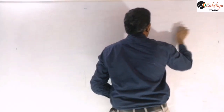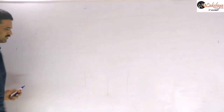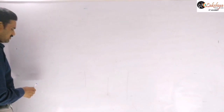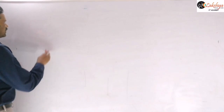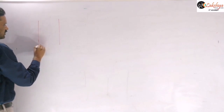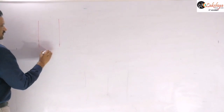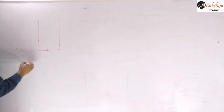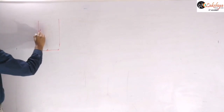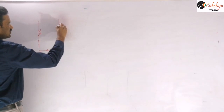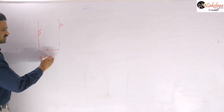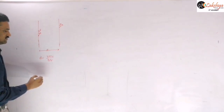Sometimes problems ask for the angle at which a particle exits a magnetic field region. For example: a charged particle enters a magnetic field region of width d = 3mv/(5Bq) at an angle of 53° with the boundary. Find the exit angle θ.